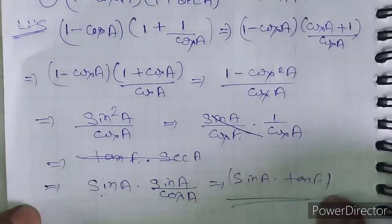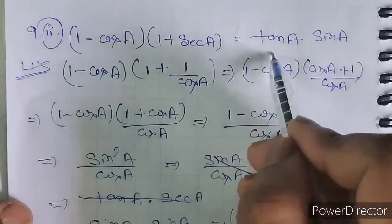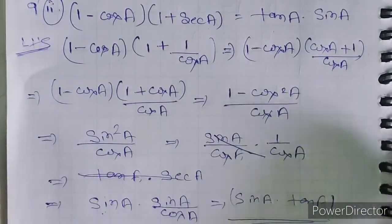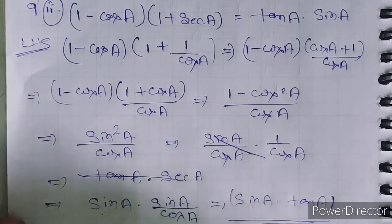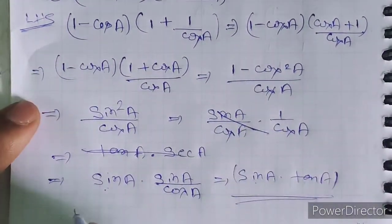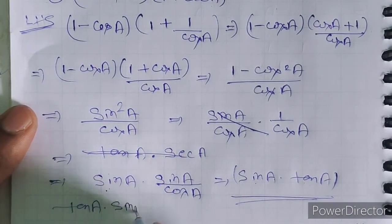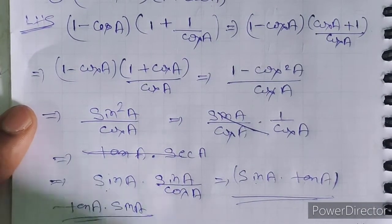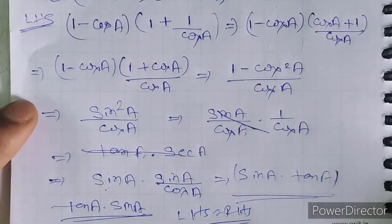So LHS equals RHS because we need tan A into sin A, and we have arrived at tan A into sin A. LHS is equal to RHS and it is proved.